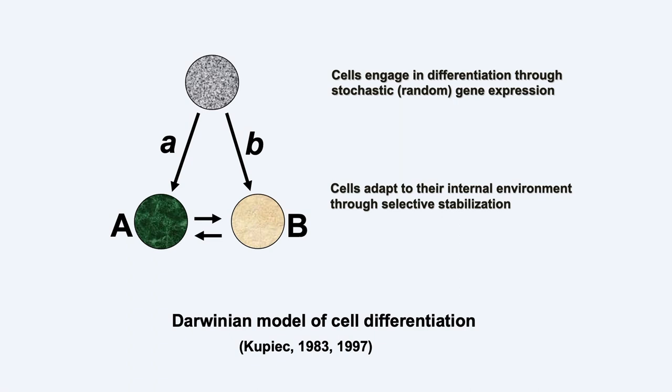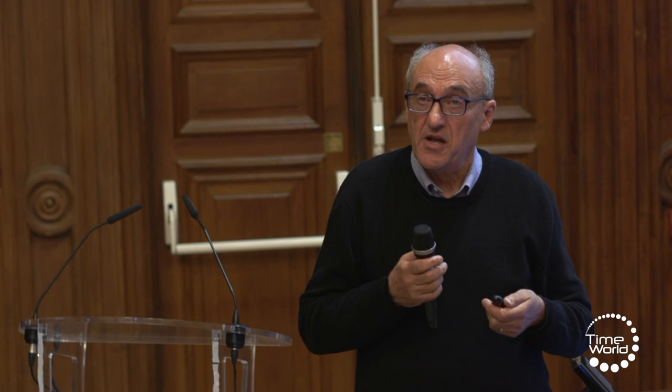In a cell, just to illustrate the general principle, two genes — A or B — can be stochastically activated, either A or B. And according to which gene is activated, the cell either becomes a type A cell or a type B cell. And in a cell population, it is the interaction between the two types of cells that leads to the stabilization of stochastic gene expression and to the stabilization of their type.